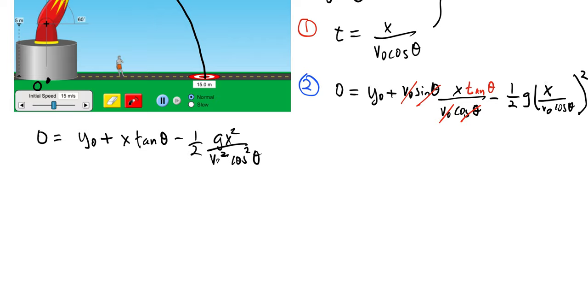So once I do that, I just have to solve for this V0 term. So we're going to push the term with the V0 in it over to the other side, so we'll get g x squared over 2 V0 squared cos squared theta, and I'm going to set that equal to y0 plus x tan theta.